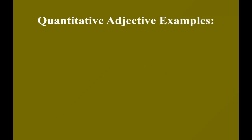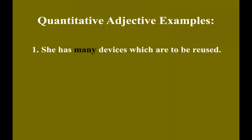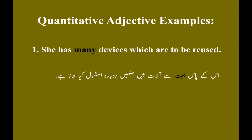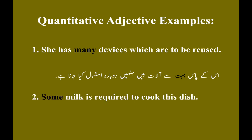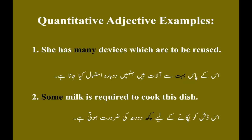Quantitative adjective examples. Example number one: She has many devices which are to be reused. Us ke paas bohut se aalat hain jinhein dubara istaymal kiya jana hai. Example number two: Some milk is required to cook this dish. Us dish ko pakane ke liye kuchh doodh ki zarurat hoti hai.